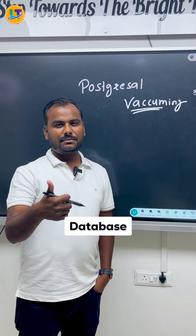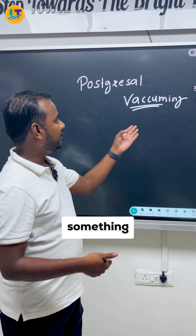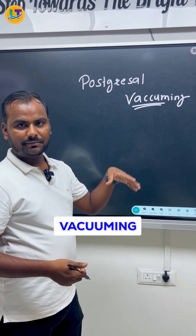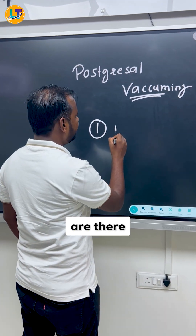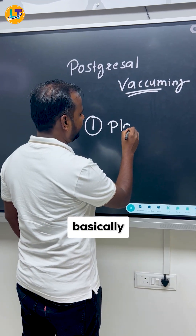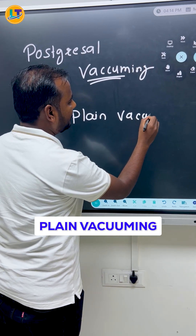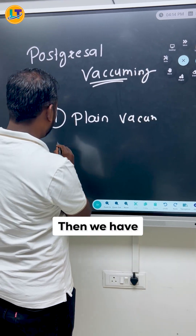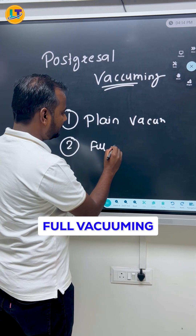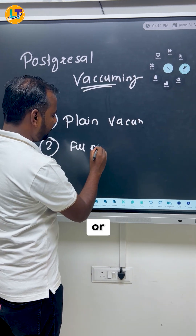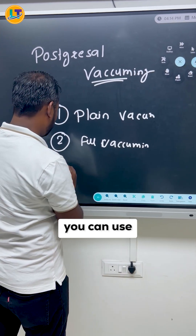In the PostgreSQL database there are maintenance activities called vacuuming. We have basically three types: plain vacuuming, full vacuuming, and vacuum with analyze.